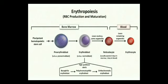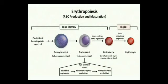To summarize erythropoiesis: starting from a pluripotent hematopoietic stem cell, we get pro-erythroblast (also called pro-normoblast), which is the committed cell for RBC. From pro-erythroblast, we get erythroblast or normoblast, which has three further phases: basophilic erythroblast, polychromatophilic erythroblast, and orthochromatic erythroblast. From orthochromatic erythroblast, we get reticulocyte, which matures in the bone marrow for one to two days, is released into the bloodstream, takes another day to mature, and we get a mature RBC or erythrocyte.